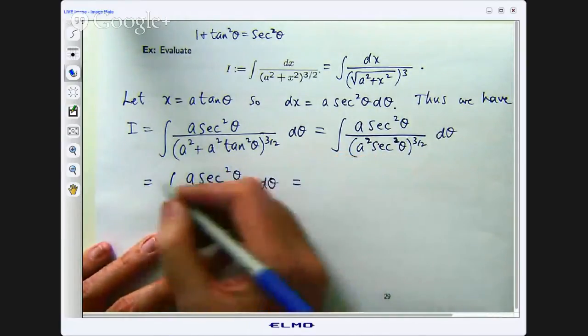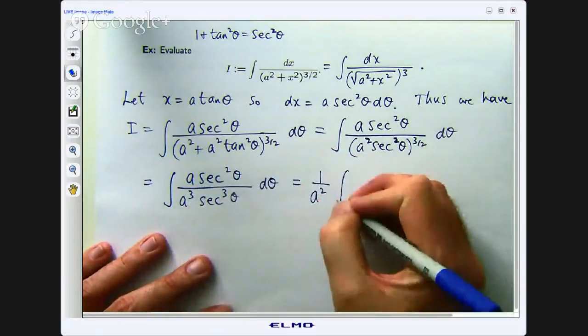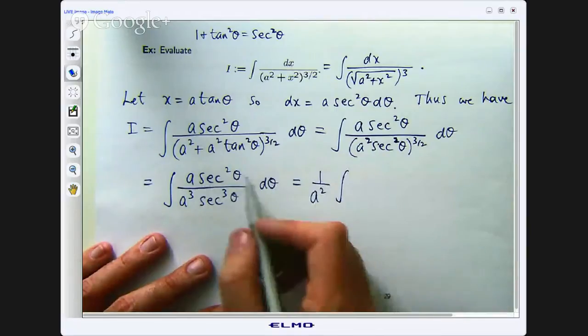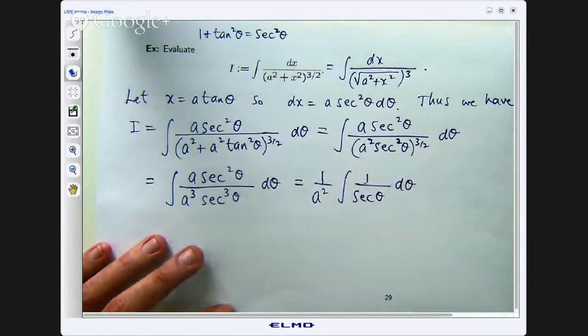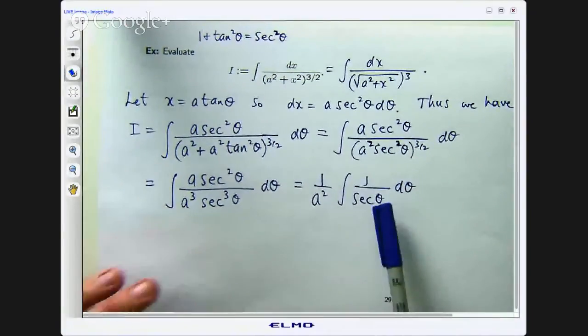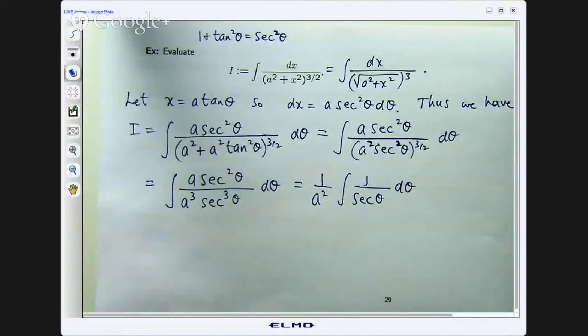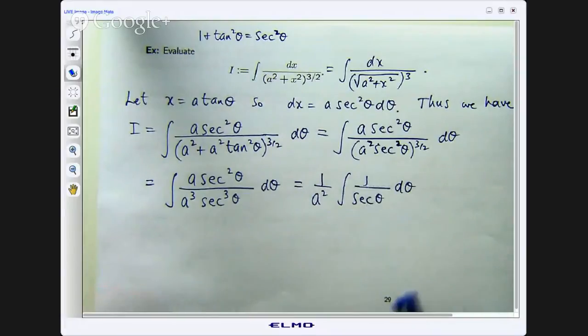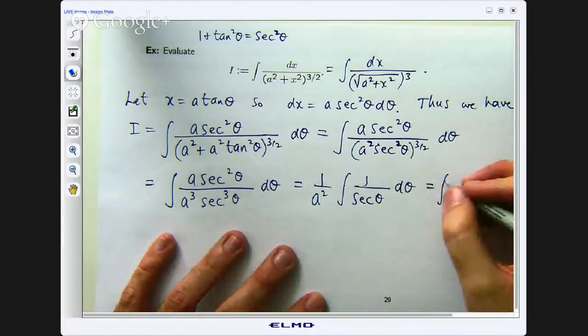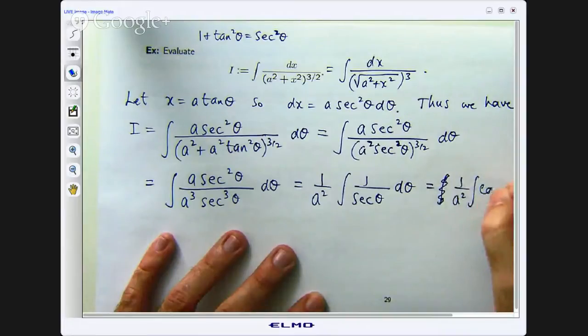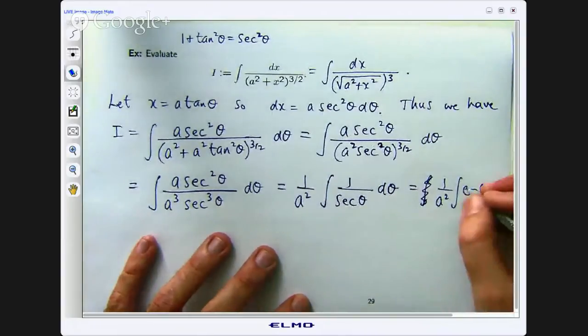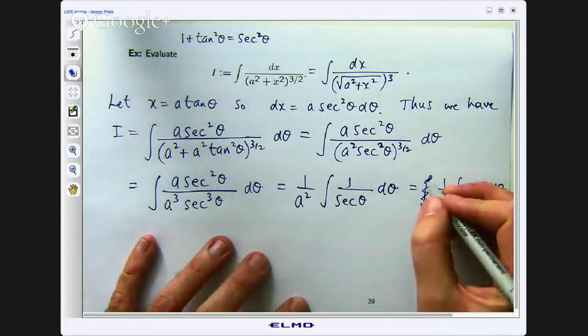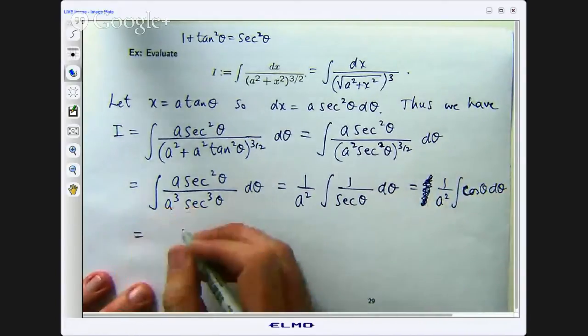So I can come up with the following. I am going to get 1 on a squared on the bottom which we can take out the front because it is just a constant. And we are integrating with respect to theta. I am going to get something like this. Now you may look at this and go, come on, how do I integrate 1 on sec theta? Well remember sec theta equals 1 on cos theta. So 1 on sec is just cos. So I know how to integrate cos. It will give me sin.